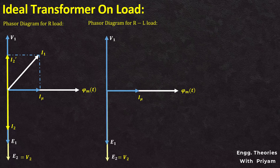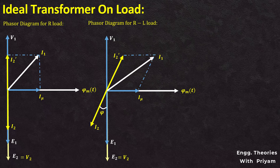If the load is inductive or an RL load is connected across the secondary, then I2 will lag the secondary EMF E2 by an angle of phi. As the additional current I2' is exactly opposite to the secondary current I2, it will lag the supply voltage V1 by an angle of phi. Based on the value of K, either I2' or I2 will be greater, and by the vector sum of magnetizing current I mu and additional current I2' we can determine the primary current I1.